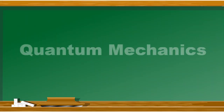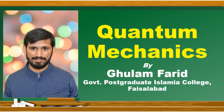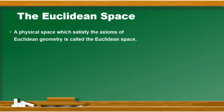Now let's see what is called Euclidean space. Euclidean space defines the physical space which satisfies the axioms of Euclidean geometry.